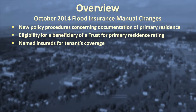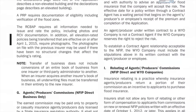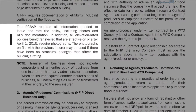Under the Transfer of Business section in the General Rules, there is updated information on the photographic requirement for transfer of elevation rated policies. After October 1st, all elevation rated policies being transferred that are effective on or after April 1st, 2015 will require photographs. The photographs on file with the previous insurer can be used if there have been no structural changes that affected the building's rating. Because the change was not included in the standard six-month advanced notice of program changes, FEMA will allow insurers to phase in the use of photographs on a voluntary basis through March 31st, 2015. The photographic requirement must be applied for all transferred policies with an effective date on or after April 1st, 2015.